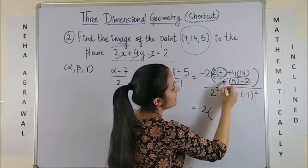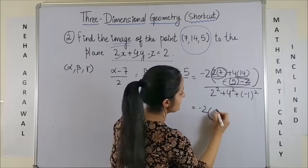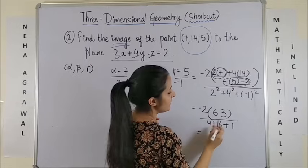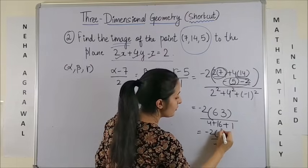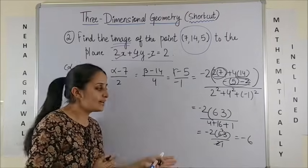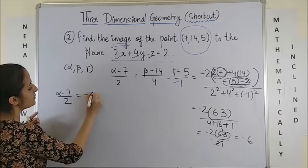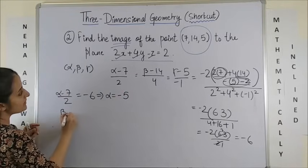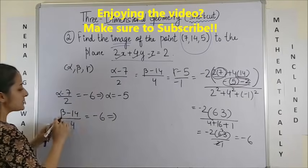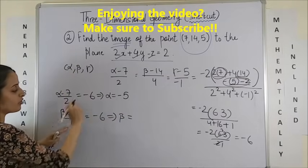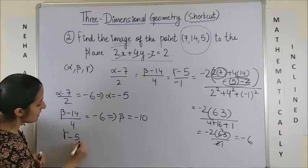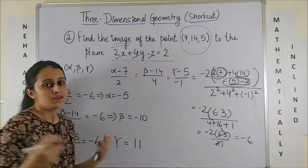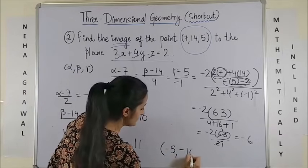On simplifying: 14 minus 7 is only 7; 56 plus 7 is 63; and below you have 4 plus 16 plus 1 which makes 21. On simplifying all this, you just get minus 6. Equating: alpha minus 7 over 2 equals minus 6 gives alpha equals minus 12 plus 7, which is minus 5. Beta minus 14 over 4 equals minus 6 gives beta as minus 24 plus 14, which is minus 10. Gamma minus 5 over minus 1 equals minus 6 gives gamma as 6 plus 5, that's 11. So the image becomes (minus 5, minus 10, 11).